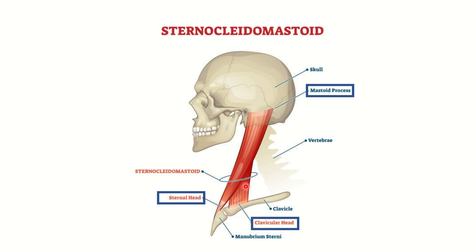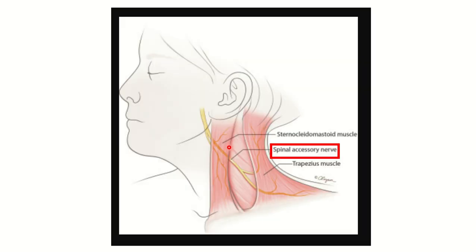Looking at the picture, we can see the sternocleidomastoid muscle and a nerve passing below it — this is the spinal accessory nerve, cranial nerve number 11. Both the sternocleidomastoid muscle and the trapezius muscle are supplied by this spinal accessory nerve.